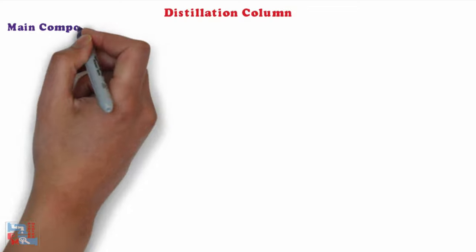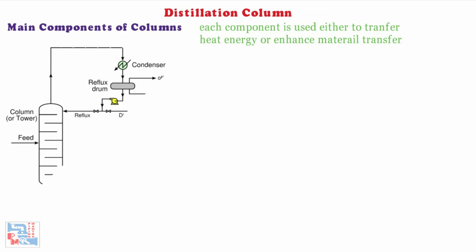Now let us talk about the main components of distillation columns. Distillation columns are made up of several components each of which is used either to transfer heat energy or enhance material transfer. A schematic of a typical distillation unit with a single feed and two product streams is shown on your screen. A typical distillation contains several major components.